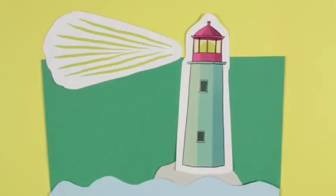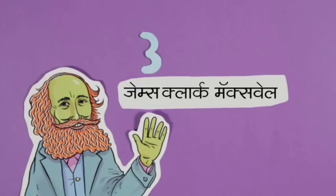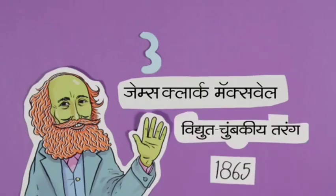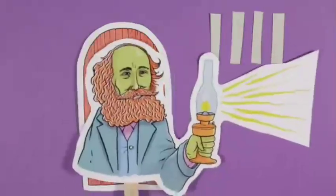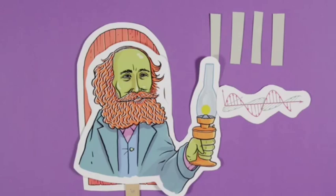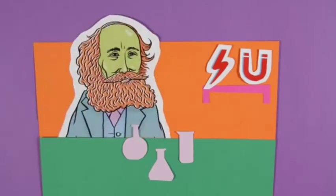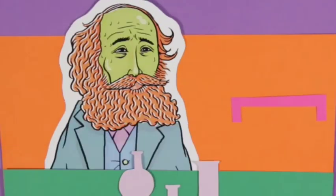फ्रेनल ने प्रकाश के सिद्धांतों की नींव तो डाली, फिर भी प्रकाश का सही रूप क्या है यह बात रहस्य ही रही। लेकिन फिर जेम्स मैक्सवेल ने बिजली और चुंबक के बीच का संबंध खोज निकाला। उन्होंने यह साबित किया कि विद्युत यानि बिजली की तरंग और चुंबकीय तरंग, दोनों मिलकर प्रकाश बनाती हैं। प्रकृति में पाई जाने वाली दो अलग-अलग शक्तियां एक दूसरे से कैसे जुड़ी हैं, यह दुनिया में पहली बार मैक्सवेल ने दिखाया।